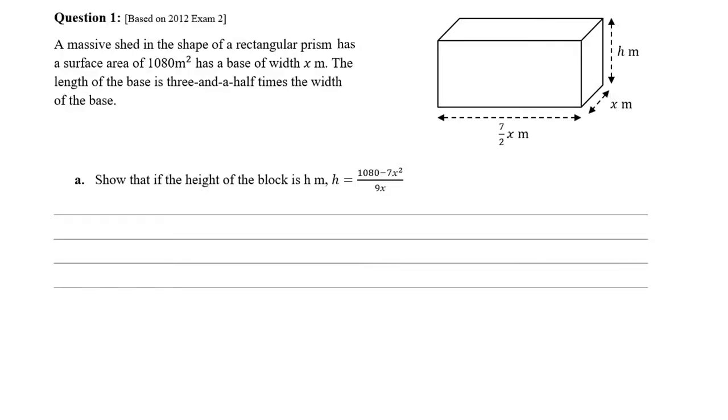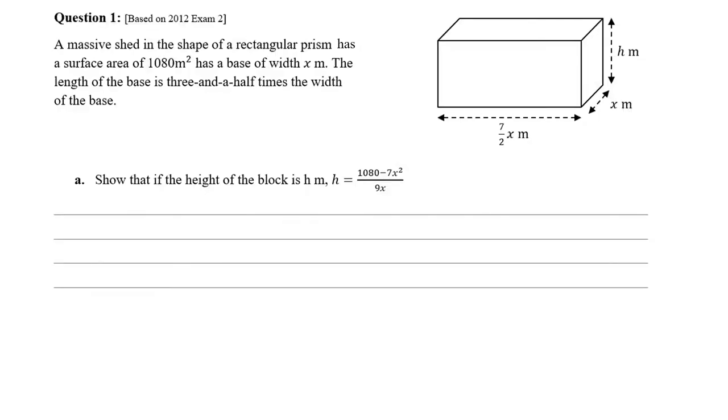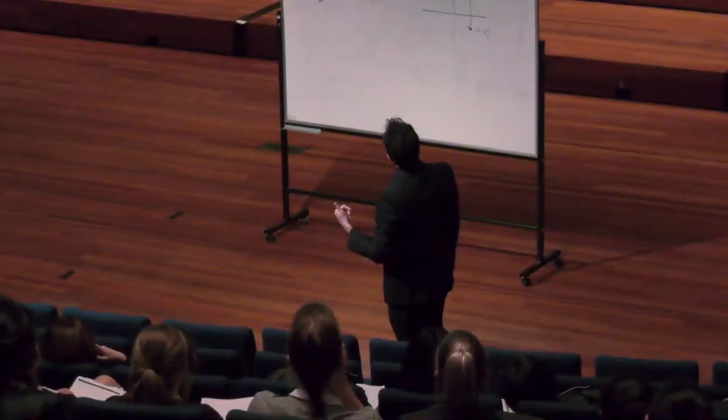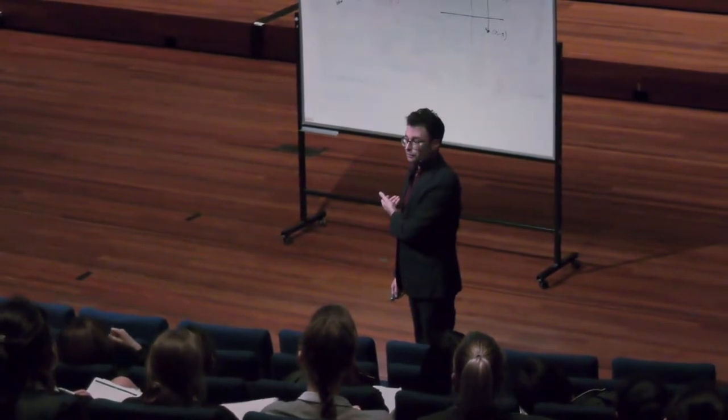Let's have a look at an actual application question. If you didn't get all that down, that's cool. It's all on my website anyway. So a massive shed in the shape of a rectangular prism has a surface area of 1,008 metres squared and a base width of x metres. The length of the base is 3.5 times the width of the base. They'll have a diagram for you, which makes things a little bit easier.